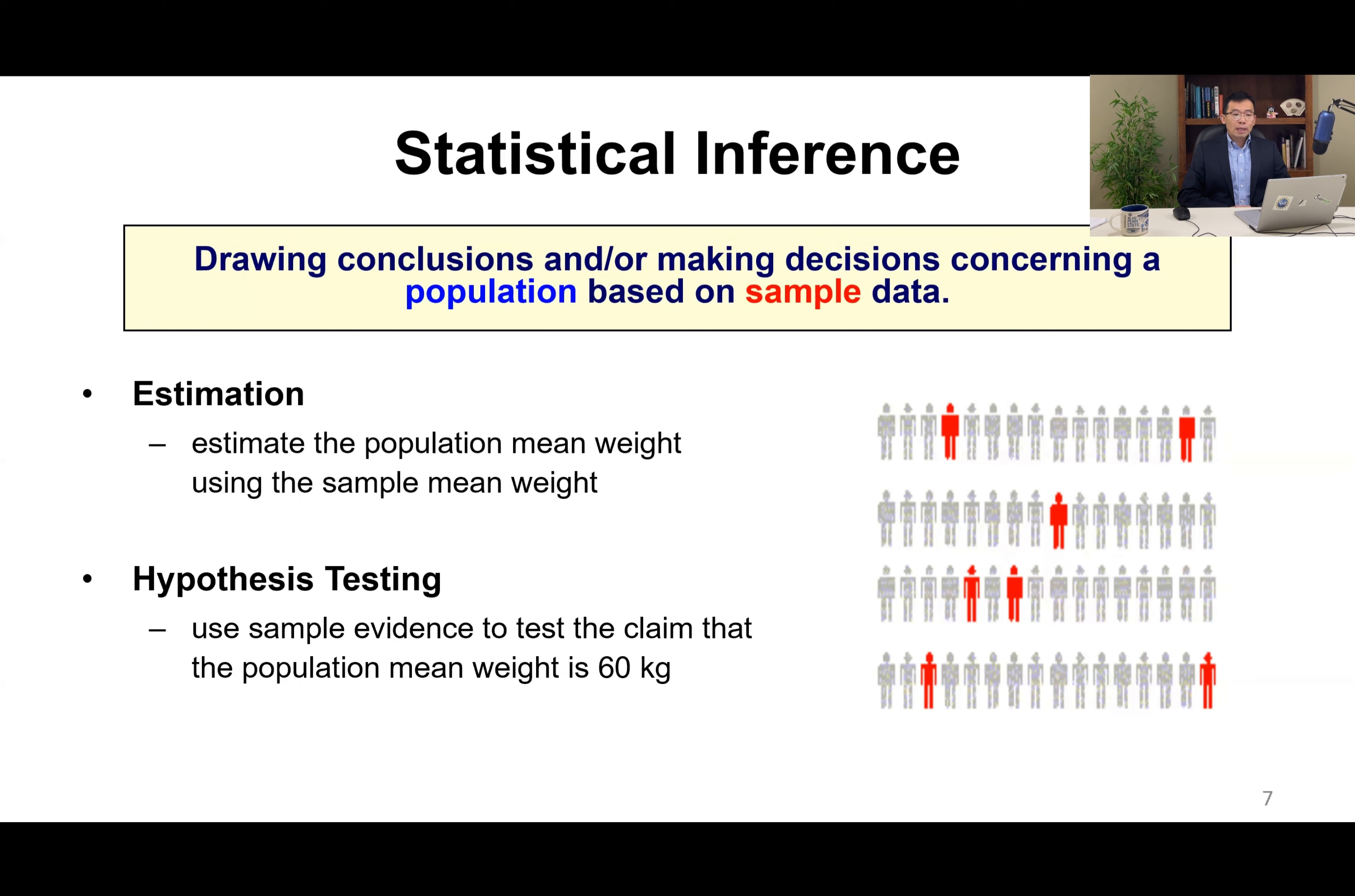Statistical inference is to draw conclusions or make decisions concerning a population based on sample data. Two ways to do statistical inference: estimation or hypothesis testing. From this figure, from the population we draw a sample, and then based on the sample mean weight we try to estimate the population mean weight, or we use the sample evidence to test the claim that the population mean weight is 60 kilograms.